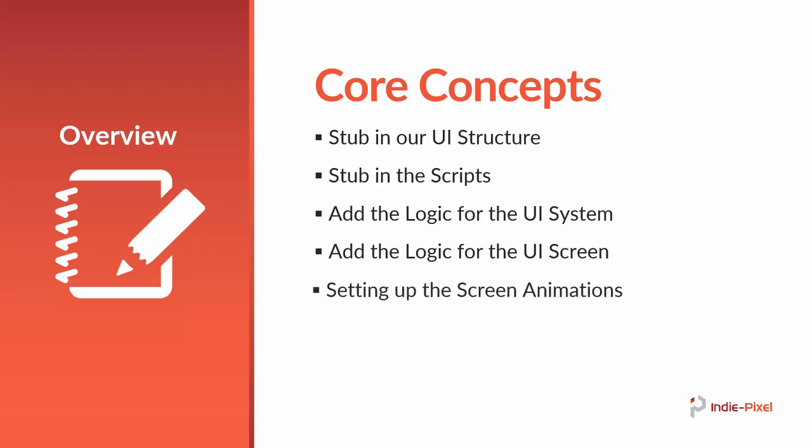Then we need to set up some screen animations. I like to use the Animator for the UI because it makes it really easy to add or update animations quickly. I am going to show you how to create a basic animator with animations that you can reuse over and over again. Finally, I am going to show you how you can start to create new screen types with the UIScreen class that we create. This is awesome because you will be able to inherit functionality from the scripts we create and build new screens without having to recode a whole UI system.